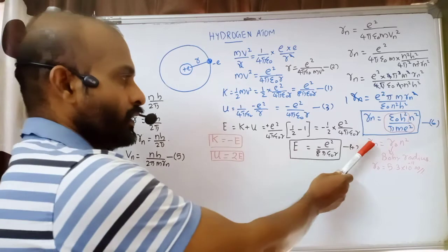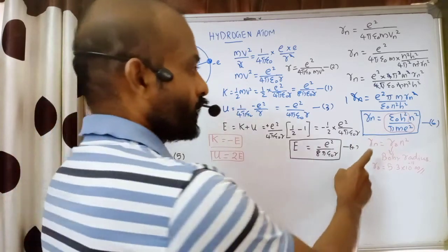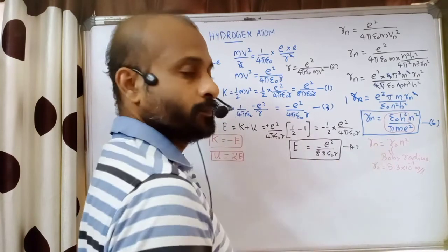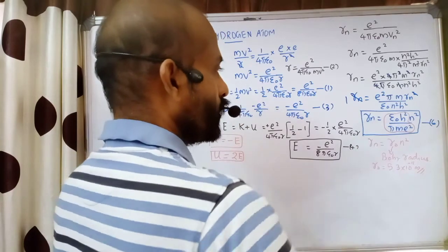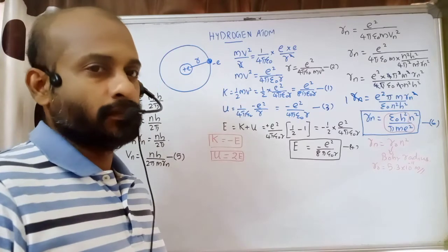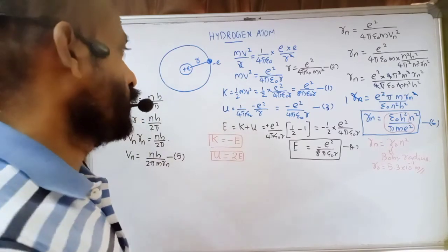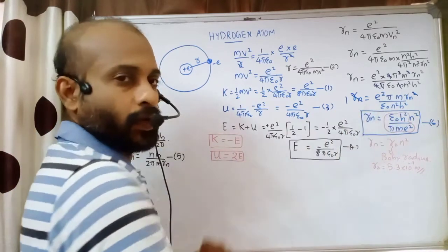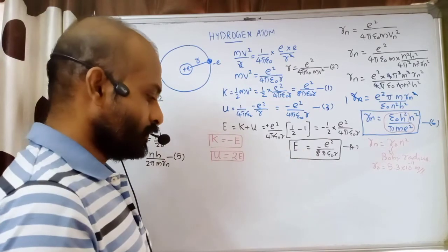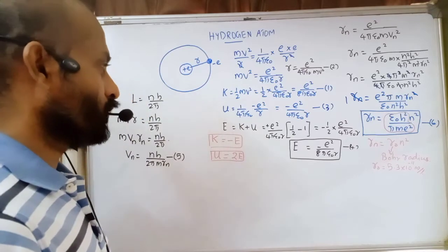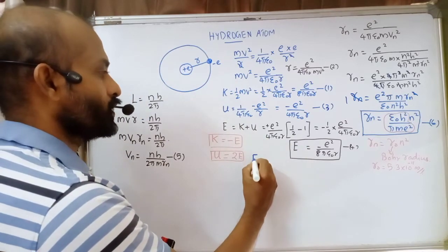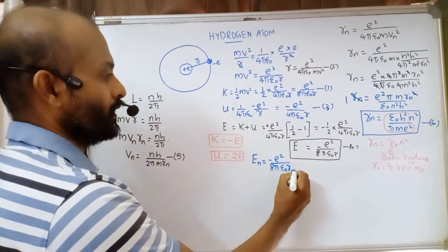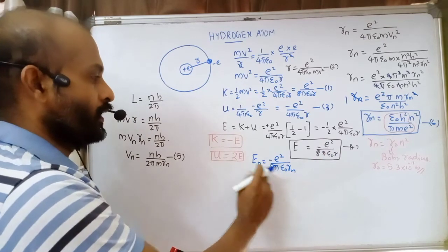We have the equation rn equals epsilon zero h squared n squared by pi m e squared, giving the radius of the nth orbit. Now we need to get the equation for total energy in terms of constant values. For the nth orbit, the total energy en equals minus e squared by eight pi epsilon zero rn.